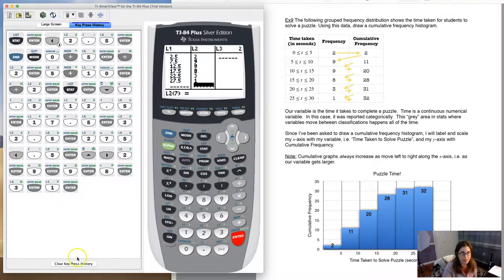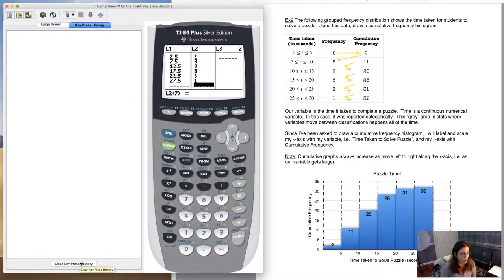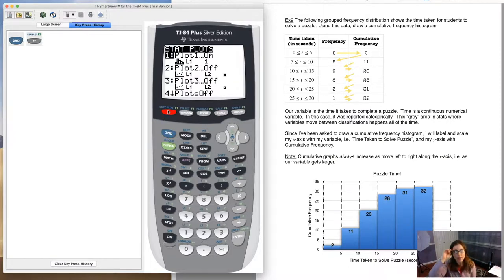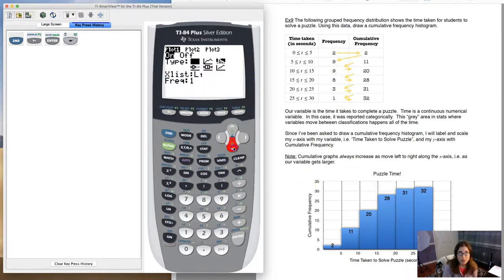So once we get our data in, the next thing you want to do is set up your stat plot. Always the same. Get your data, set up a stat plot, zoom. So here we go. Second y equals. Now if I look at my stat plots the way they are, looks like I have one on two off. That's great. Right now I am making a histogram here. So I have the correct type. My variable is in L1, but my frequencies are not the number one. I have a whole frequency list in L2. So I need to edit this out. So let me hit enter and scroll down here to L2.